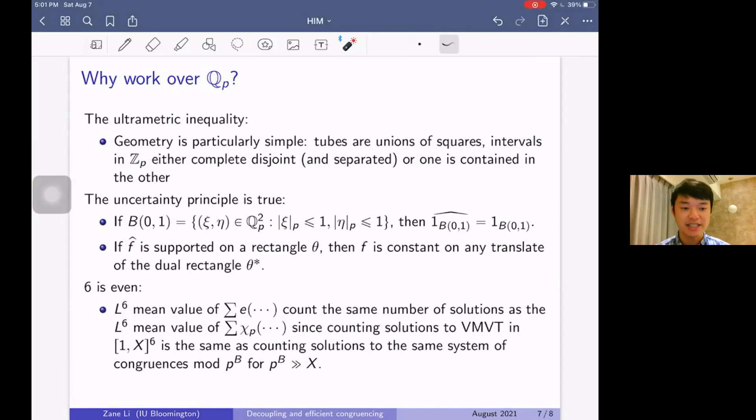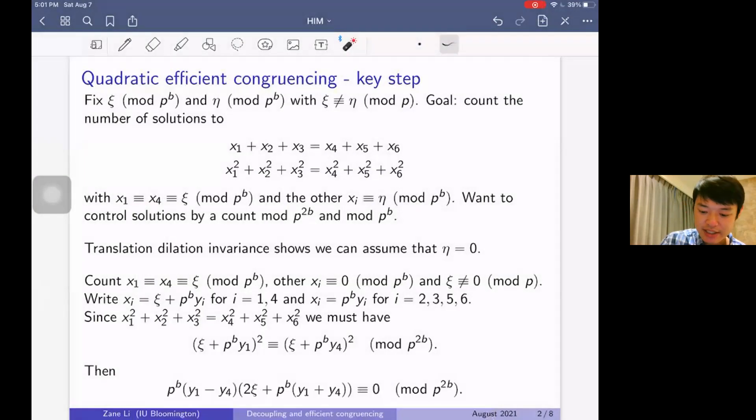So in the Q_p world, all the heuristics that are used in harmonic analysis are essentially true. For example, tubes are unions of squares. Intervals in the p-adic integers, which is the analog of the interval [0,1], they're either completely disjoint and separated or they're contained in one another. Another advantage is that the uncertainty principle is true. So the Fourier transform of the unit ball is the unit ball itself. And furthermore, we use - so you can prove decoupling theorems in Q_p, but to pass them to number theory knowledge, we also use the fact that six is even. For example, the L^6 mean value of the exponential sum counts the same number of solutions as the L^6 mean value of the character sum.